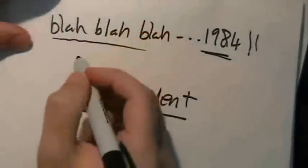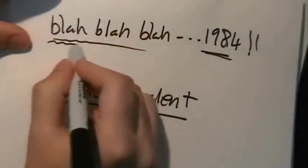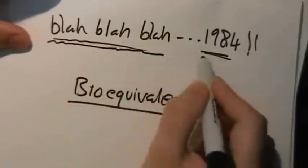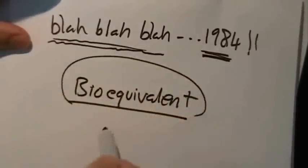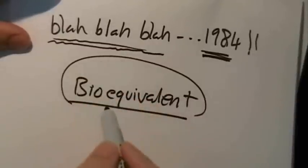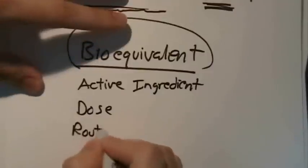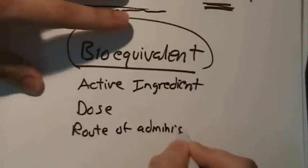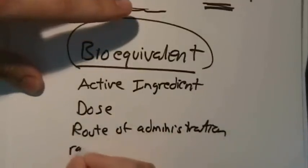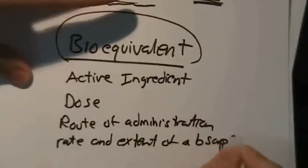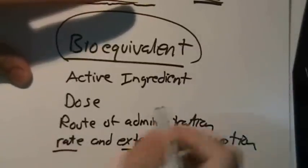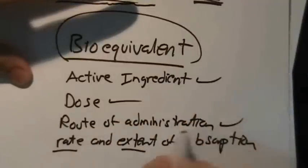So according to the Drug Prize Competition and Patent Term Restoration Act of 1984, the company making the generic drug must show that their generic is bioequivalent to the brand name. Bioequivalent means that the generic drug must have the exact same active ingredient, dose, route of administration, and the same rate and extent of absorption as the brand name.